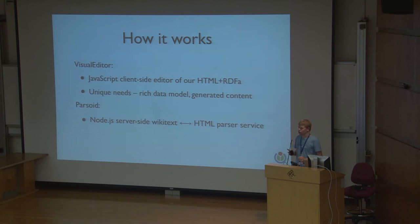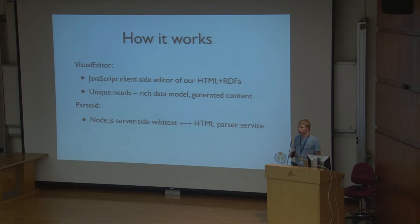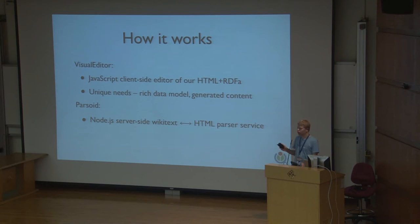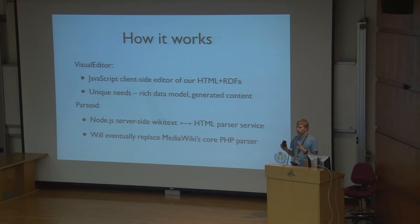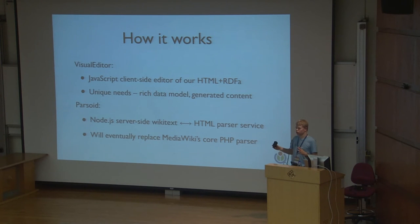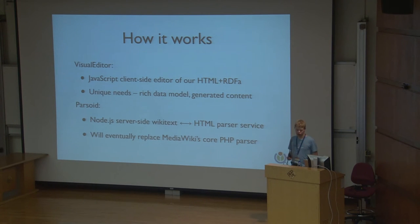Then we have Parsoid, which is a separate component and is a rocket-science-y thing in its own right. It is a server-side application written in Node.js that parses Wikitext, converts it to HTML, and is also able to convert HTML back to Wikitext. We have an existing PHP parser that takes Wikitext and renders it for display. But that only goes one way — it takes Wikitext and turns it to HTML, and that HTML is useless for turning it back into Wikitext. So we had to build a separate parsing system from scratch that does two-way conversion.